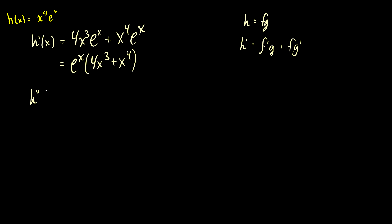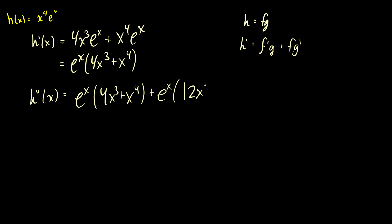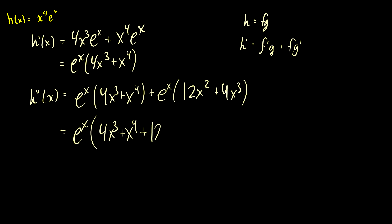Now we can take the second derivative, h double prime of x. First, we take the derivative of e to the x, which is e to the x, and multiply it by 4x cubed plus x to the 4. Then we add e to the x multiplied by the derivative of 4x cubed plus x to the 4, which is going to be 12x squared plus 4x cubed. So at this point we can simplify further — we take out an e to the x, and we'd be left with 4x cubed plus x to the 4 plus 12x squared plus 4x cubed. Then we put the 4x cubed terms together to make 8x cubed. But that's the second derivative — as you can see, we can keep going and going.